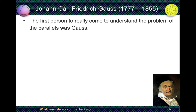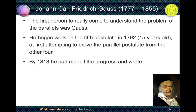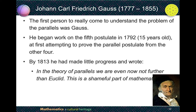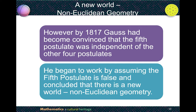The first person to really come to understand the problem of parallels was Gauss. He began to work on the fifth postulate when he was 15 years old, following his predecessors in attempting to prove it from the other four. By 1813, he wrote: 'In the theory of parallels, we are even now not further than Euclid. This is a shameful part of mathematics.' However, by 1817, Gauss had become convinced that the fifth postulate was independent from the other four. He began working by assuming the fifth postulate is false, and concluded that there is a new world — non-Euclidean geometry.